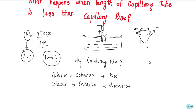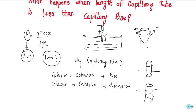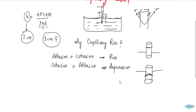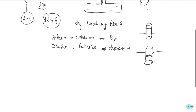Capillary rise means the liquid surface in the tube is higher like this, and capillary depression means the liquid surface is lower like this. From this you can see that if adhesion is more than cohesion, then there is a capillary rise.